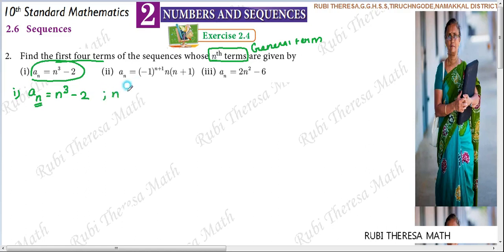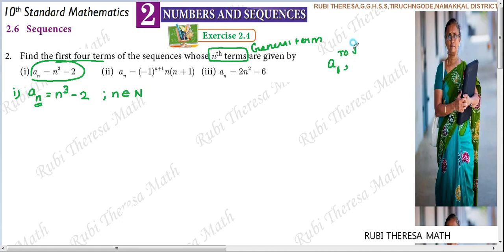We can substitute natural numbers — that is, starting from 1. For sequences, the n value starts from 1 only. So we find A1, A2, A3, A4. For all three subdivisions, we have to find the first four terms: the 1st term, 2nd term, 3rd term, and 4th term.